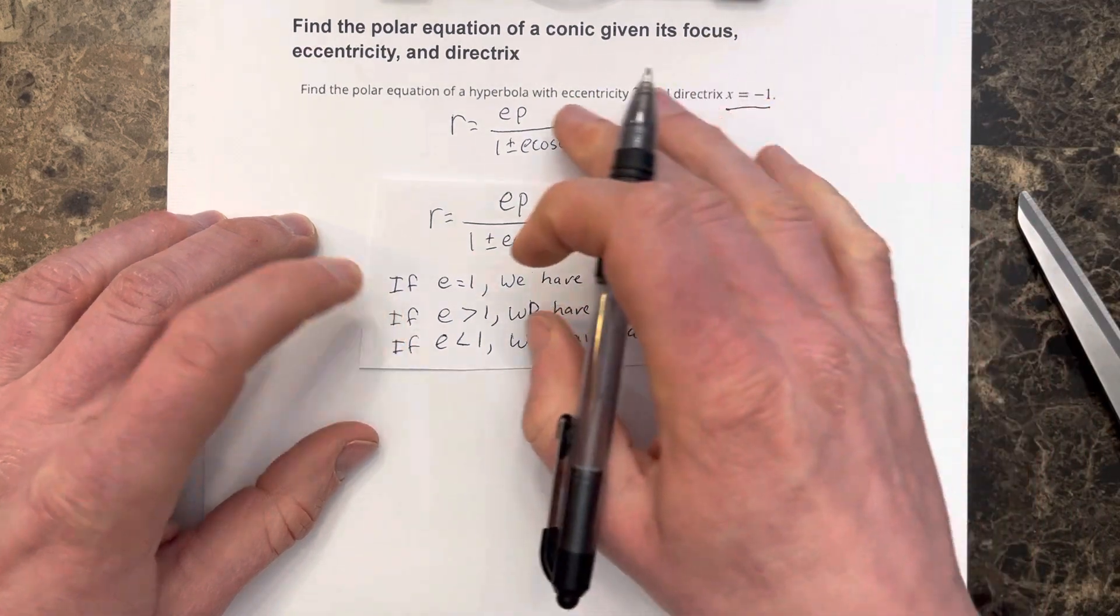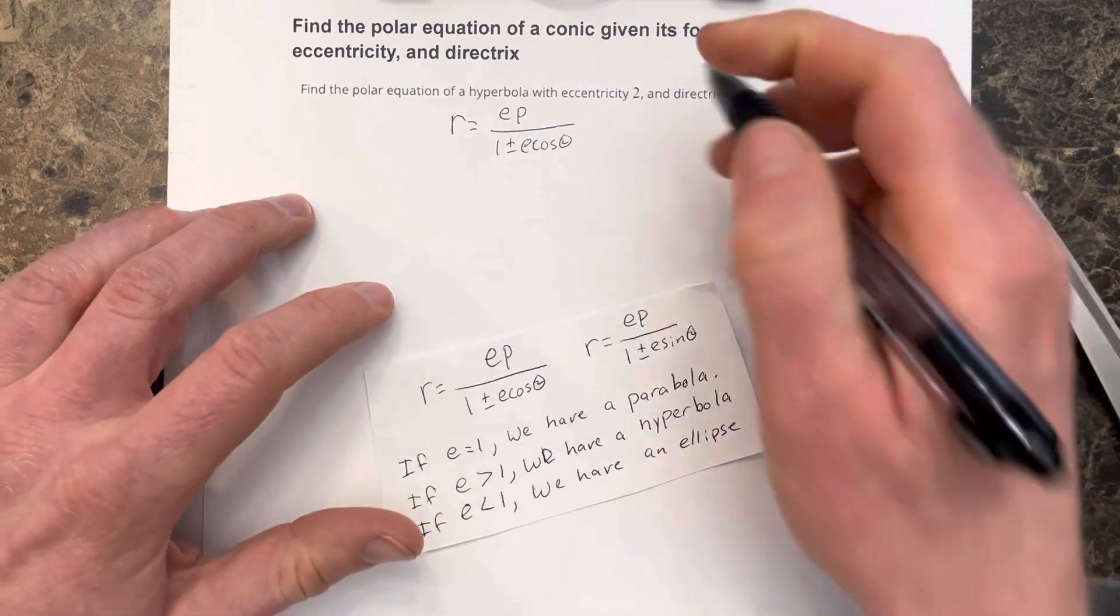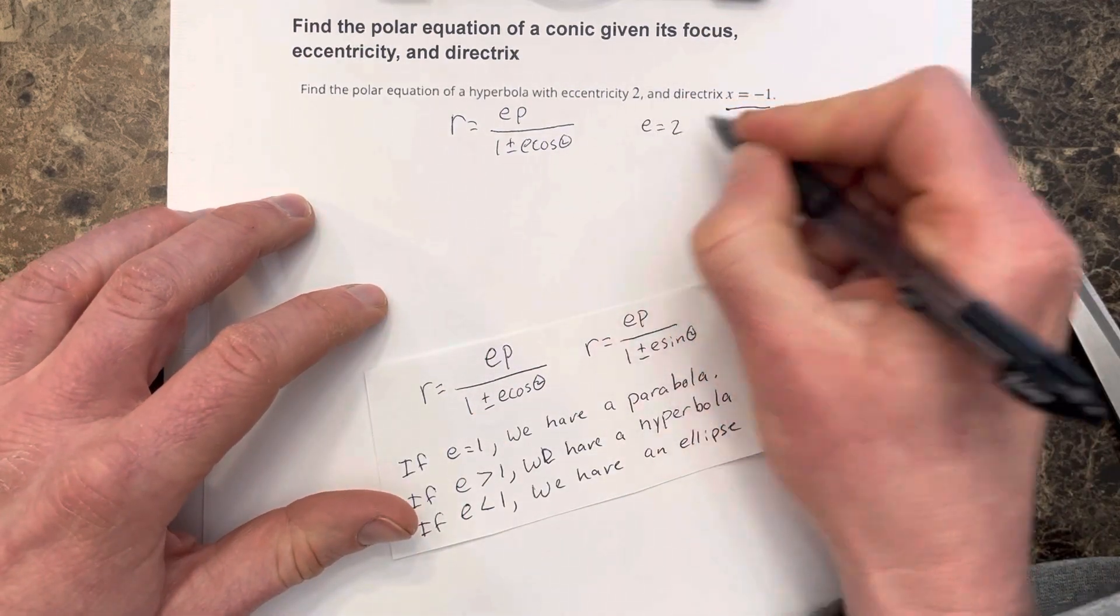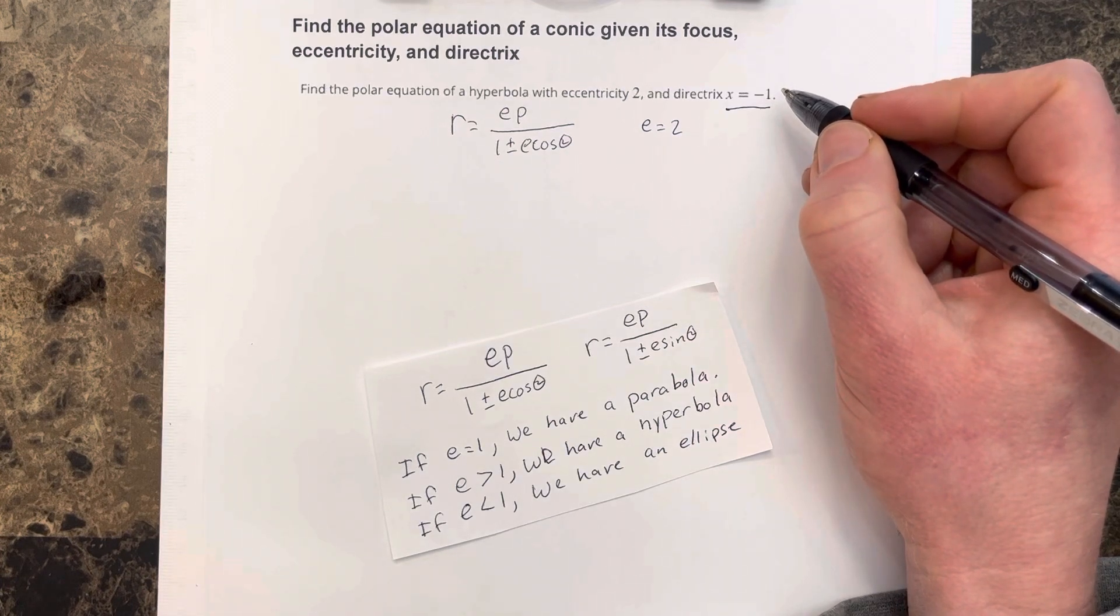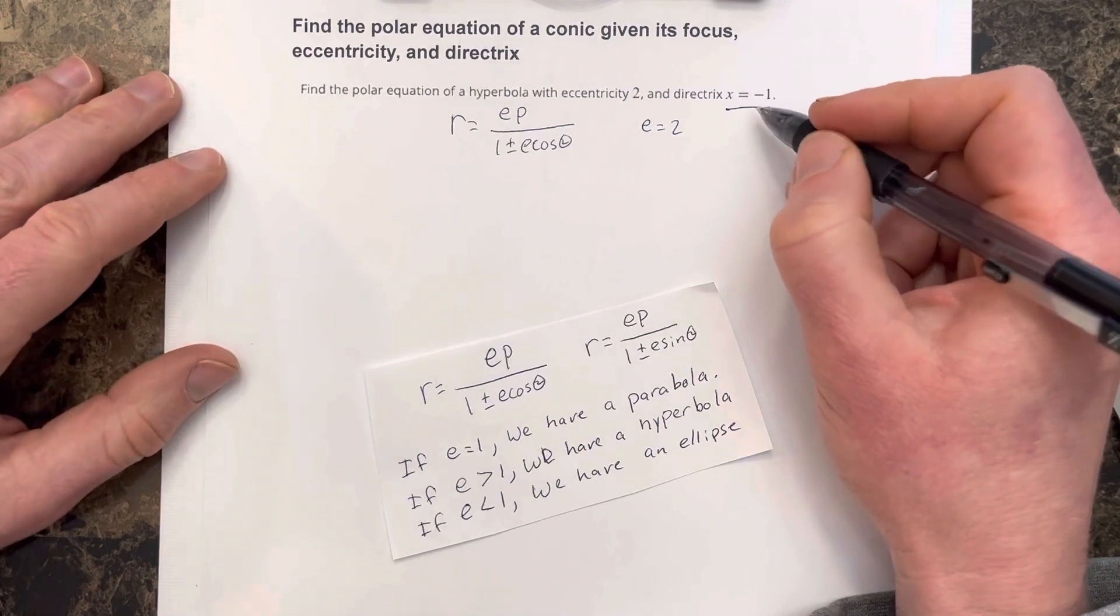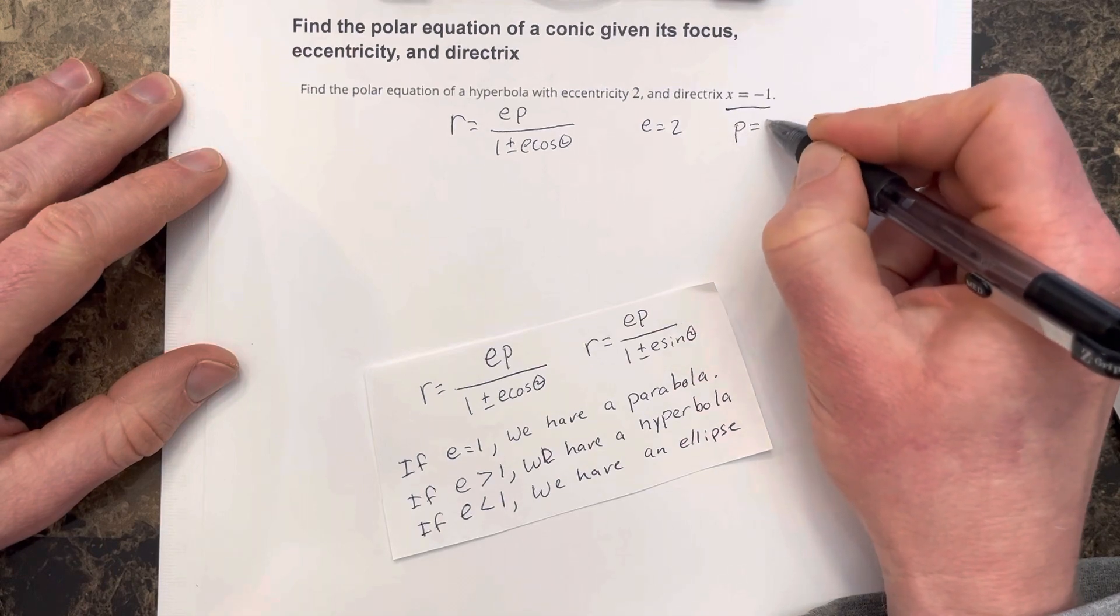So then I know that e is equal to 2. And my directrix is x equal negative 1, which means the p value here would be 1 because I'm 1 to the left of the pole. So p is equal to 1.